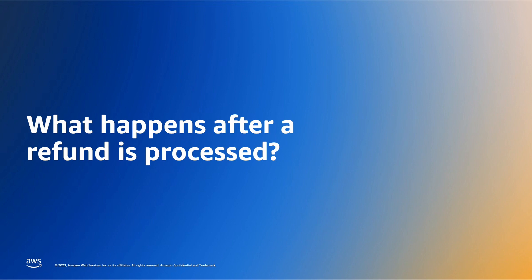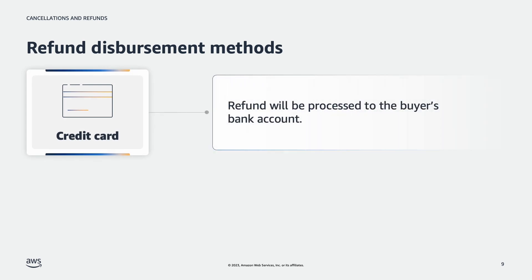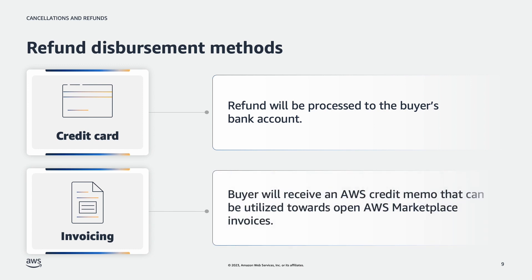Now I'll hand it off to Emma to walk you through what happens after a refund is processed. Thanks, let's dive in. A refund can be processed in two ways depending on whether the buyer's default payment instrument is a credit card or invoicing. If credit card, the refund will be processed to the buyer's bank account. If invoicing, the buyer will receive an AWS credit memo that can be utilized towards open AWS Marketplace invoices.